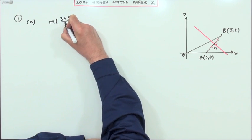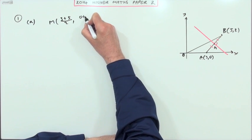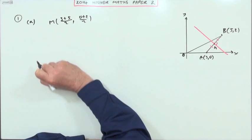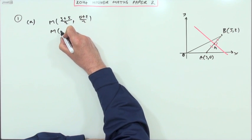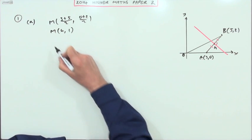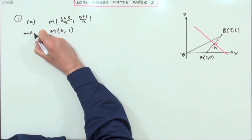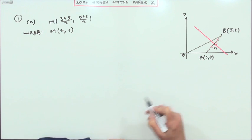You're probably going to write it all out: (3+5)/2 for the average of the x coordinates, (0+2)/2 for the average of the y coordinates. So that means the midpoint is 8/2 = 4, and 2/2 = 1. That's the midpoint of AB that I've called m.